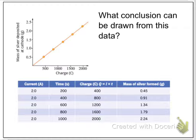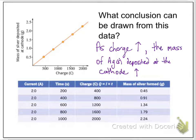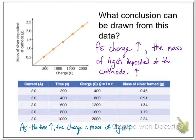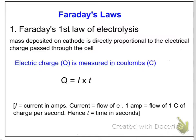Here is a graph and a table from your book. What I'd like you to do is try to answer the question: what conclusion could be drawn from this data? The x-axis is charge, with the letter C — we're going to learn that C stands for coulombs. The y-axis shows mass of silver deposited at the cathode in grams. As the charge increases, the mass of silver deposited also increases. Looking at the table, as time increases, the charge increases, which means the mass of silver deposited also increases. This happens to be the first of Faraday's two laws about electrochemistry.